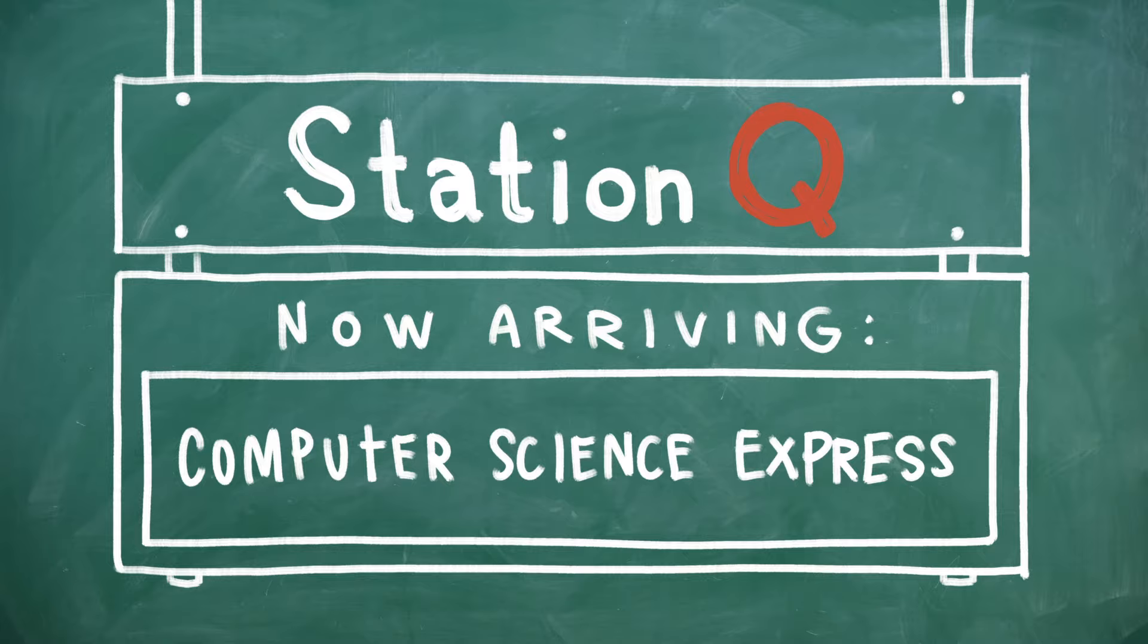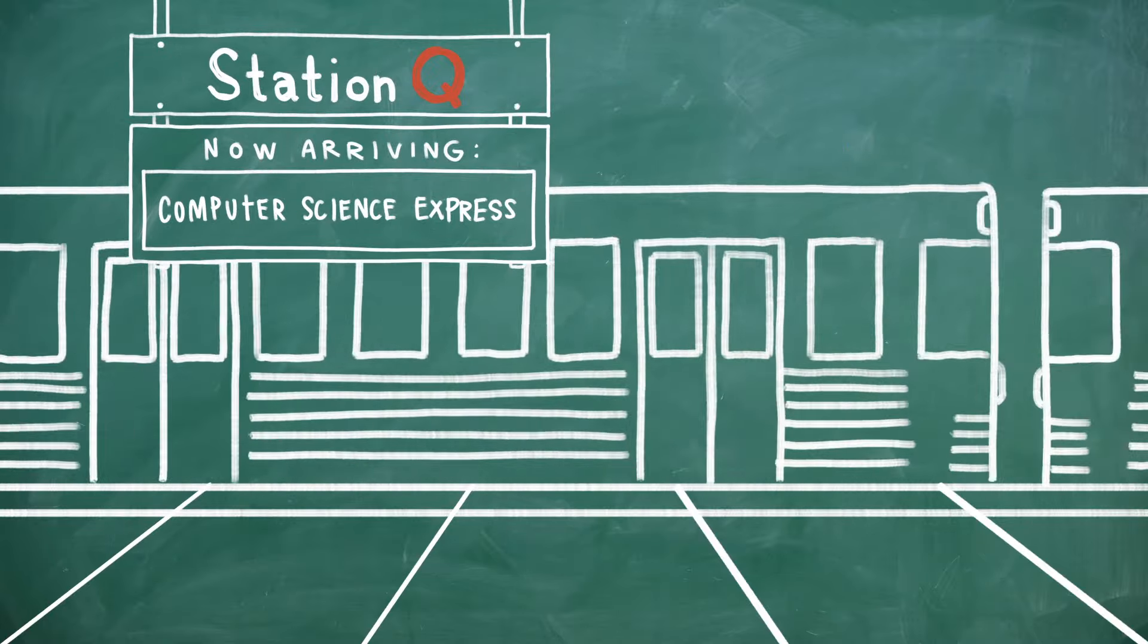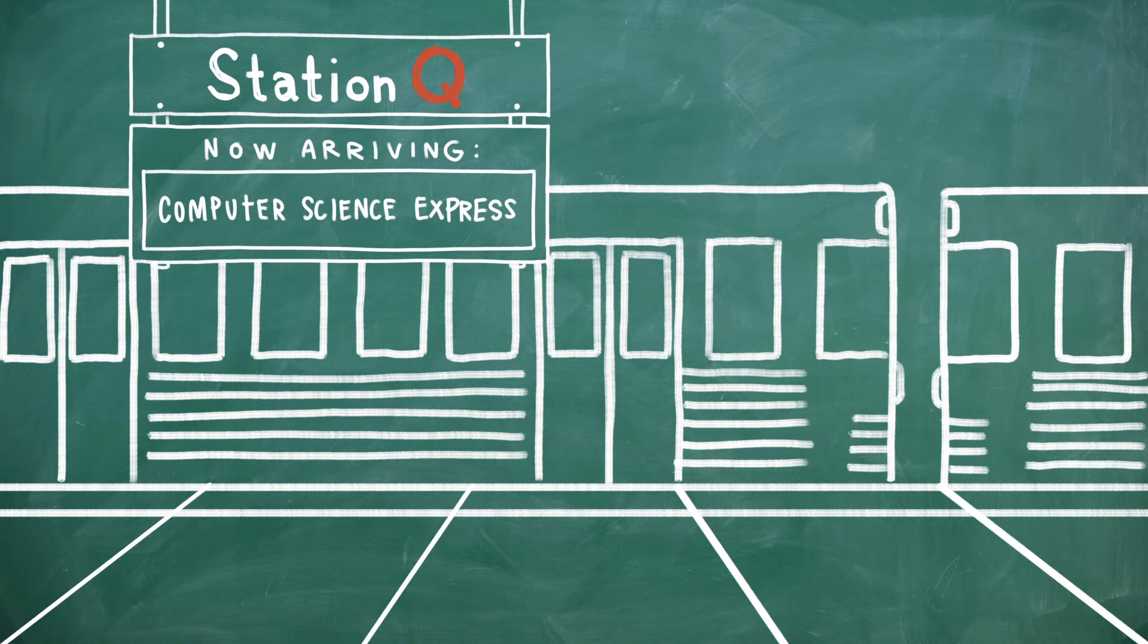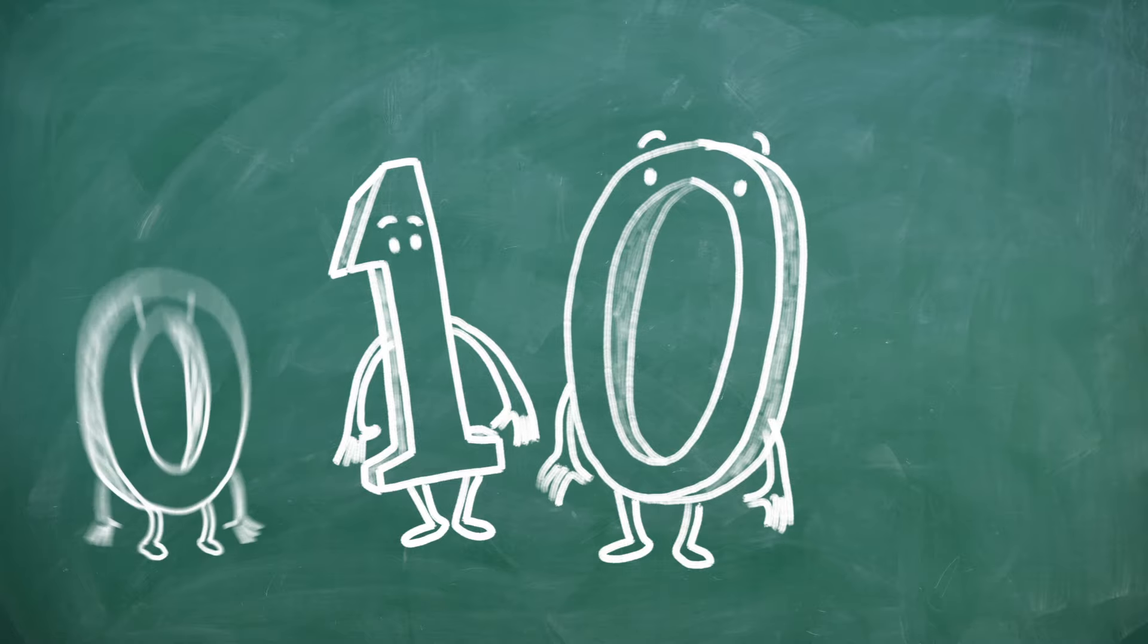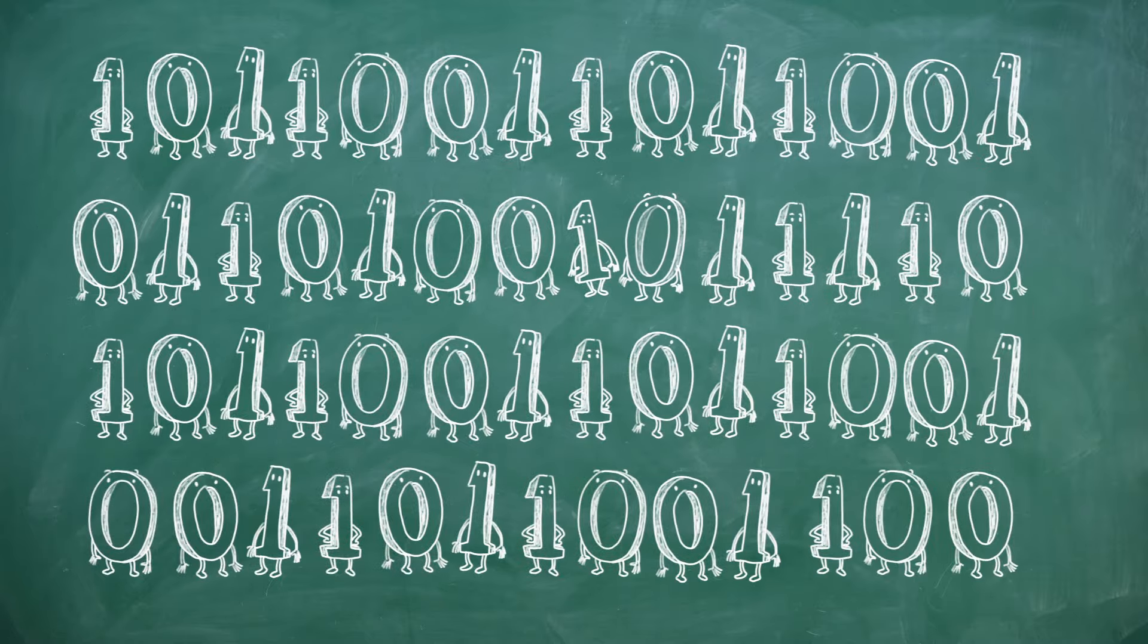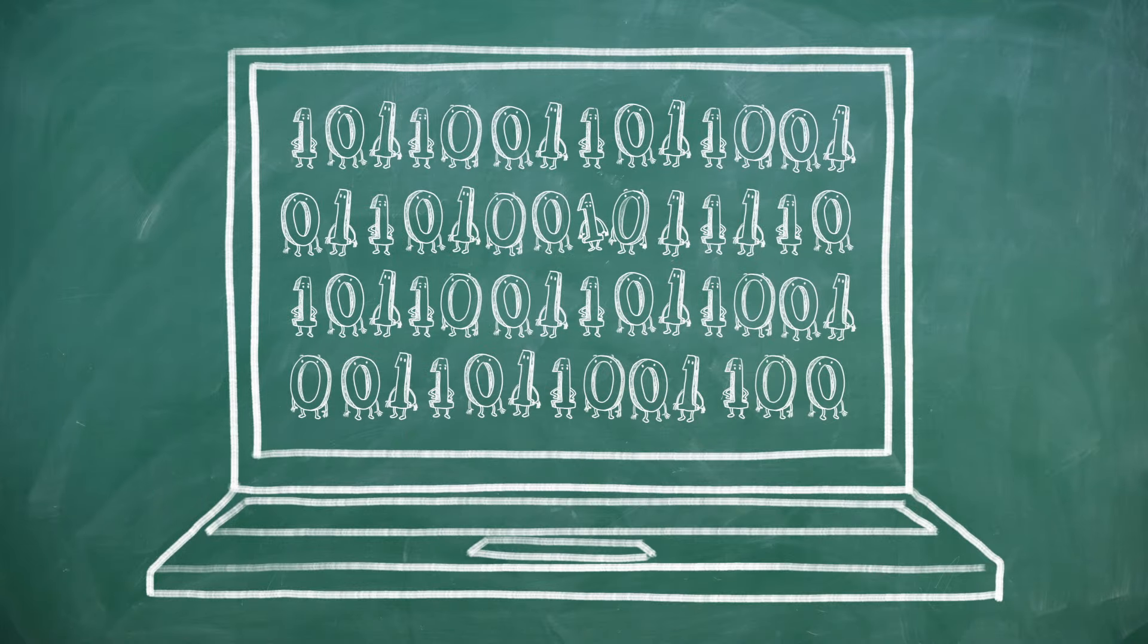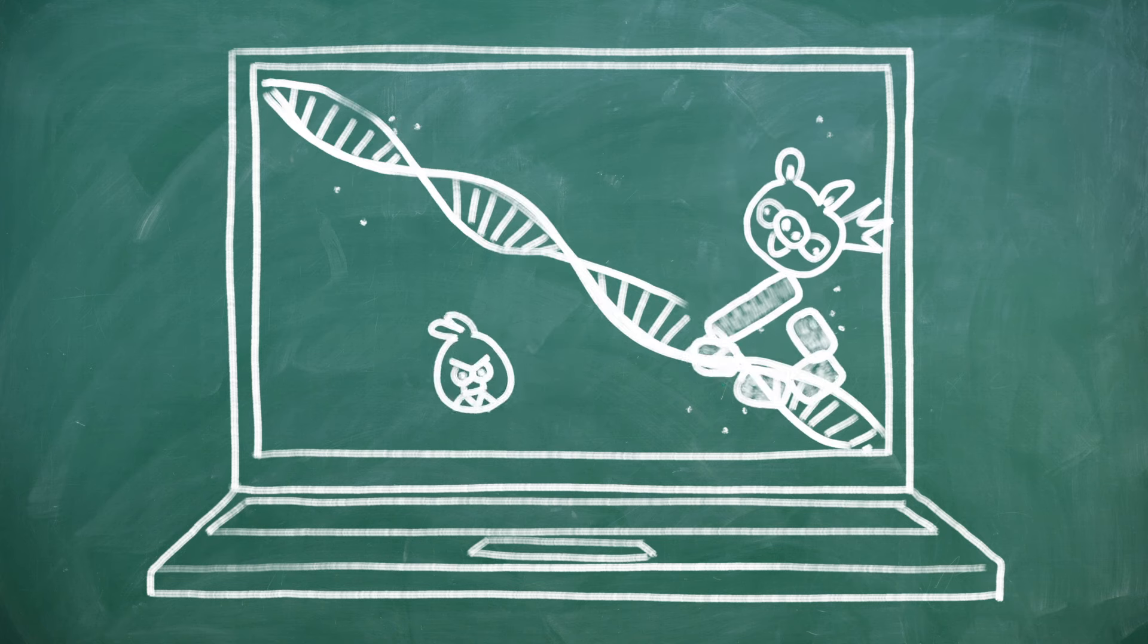You know that the laptop on your desk, the smartphone in your hand and the tablet in your bag all work with information in the form of bits. Bits, which can be either a one or a zero, are arranged in long, artful strings to get computers to do all sorts of things, like sequence DNA or fling angry little birds at pig-built fortresses.